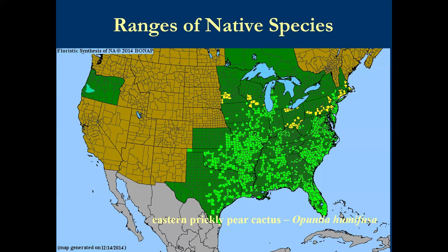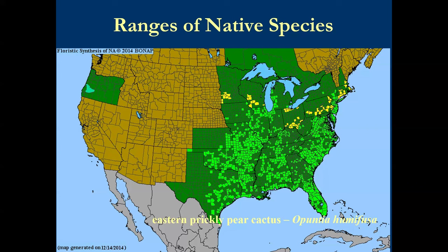These are botanists who have been working for over a hundred years. For example, the eastern prickly pear — people come to my garden and start scratching their heads, but it is native to New York; it's all over the West Point area. Any place showing light green or yellow counties on the map indicates native status in that county. It's a really nice source of information for every plant species.